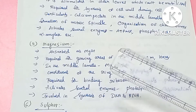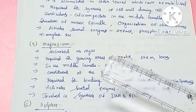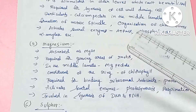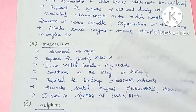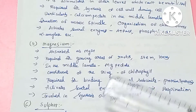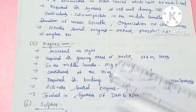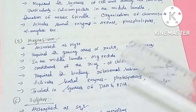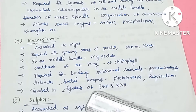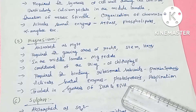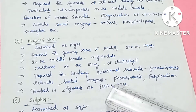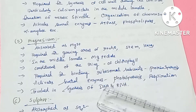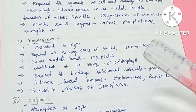Chlorophyll has a ring-like structure in which magnesium is the main constituent. Magnesium ions are also required for ribosome function — they help bind the large and small subunits with mRNA. Enzymes are also activated by magnesium.